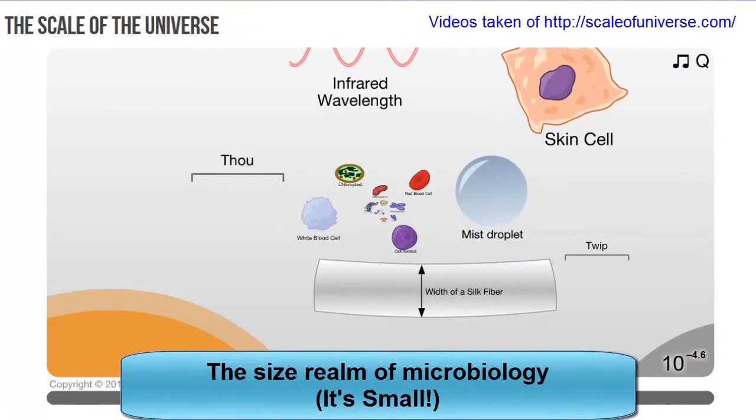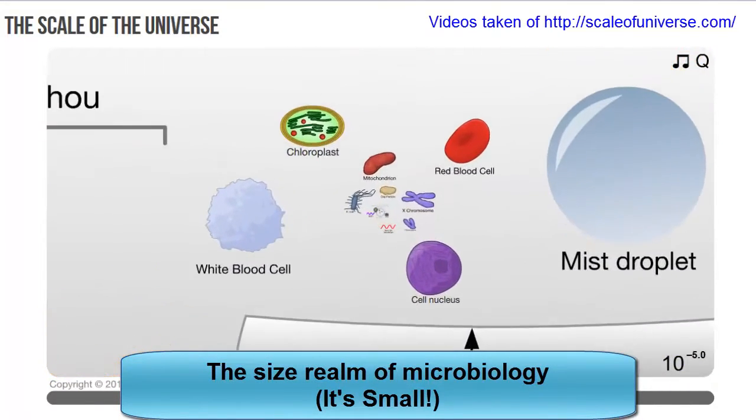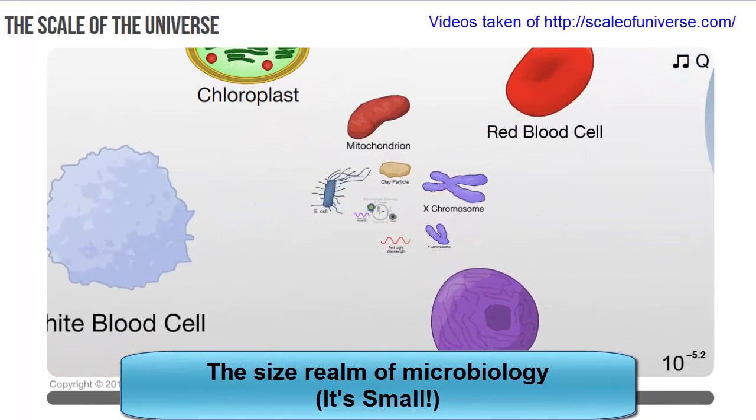This realm, ranging from large cells like the skin cell and going all the way down to things like red blood cells, mitochondria, and chromosomes, is the size realm of research focus for most microbiologists.